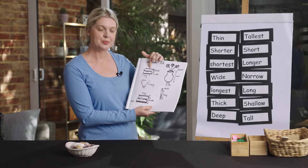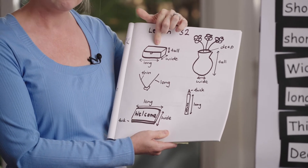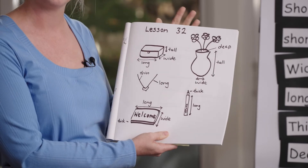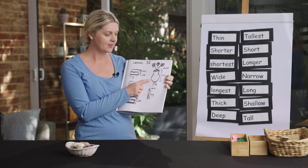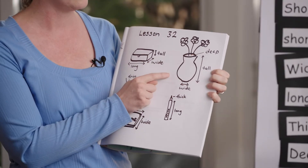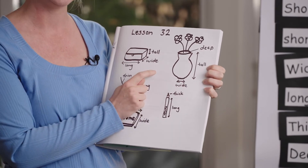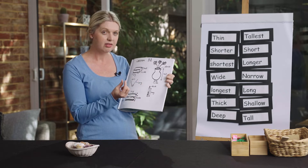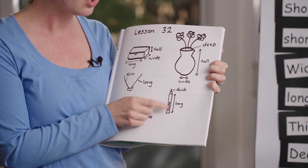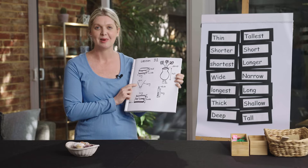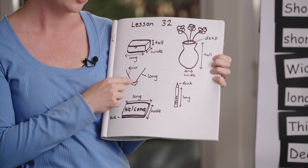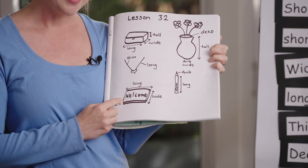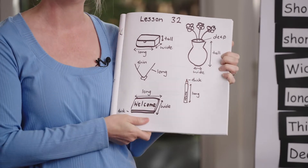Here I drew my lunchbox. If I'm thinking about the attribute of length, I could measure how tall, how wide, or how long my lunchbox is. I looked at a vase — I could measure how tall, how deep, or how wide it is. Here I drew a texter; I could think about how thick the tip is, or how long the texter is. Here's my necklace — we could measure how thin the string is or how long it is. Here's my welcome mat; I could measure how long, how wide, or how thick it is. Great job!